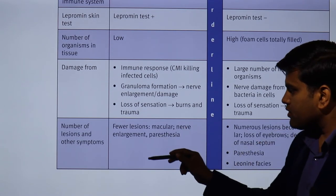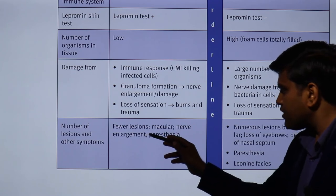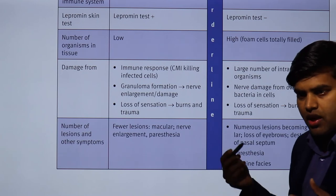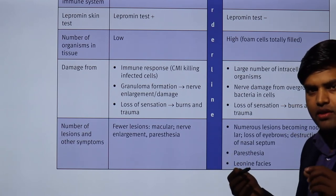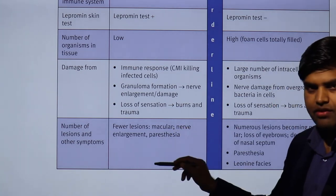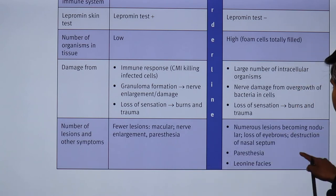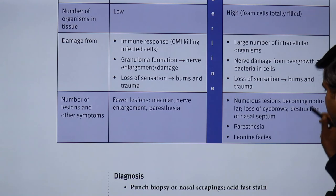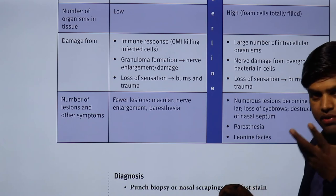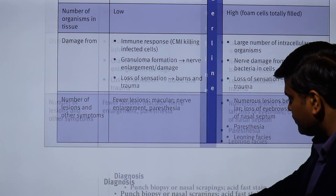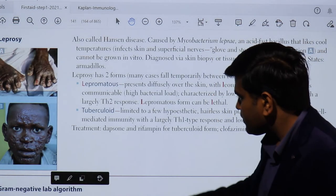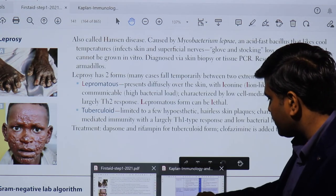In the initial tuberculoid stage, symptoms include fewer lesions, macular hypopigmented skin lesions, nerve enlargement, and paresthesia — reduced touch and pain sensation in the hypopigmented lesions. In the advanced lepromatous stage, there are numerous nodular lesions, loss of eyebrows, destruction of the nasal septum, paresthesia, and the classic leonine (lion-like) facies.